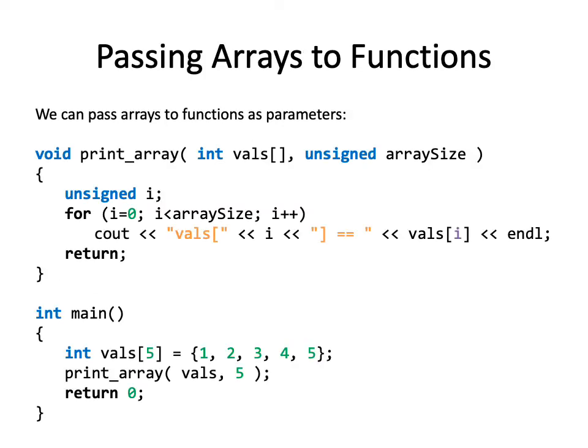So passing arrays to functions. Here's a quick, fast and dirty example. Here's how we can do it. So let's first skip down to the main method below. We declare an array of 5 integers and initialize them. Then we call a function called printArray, where we pass the array, vals, and the size of the array, 5.